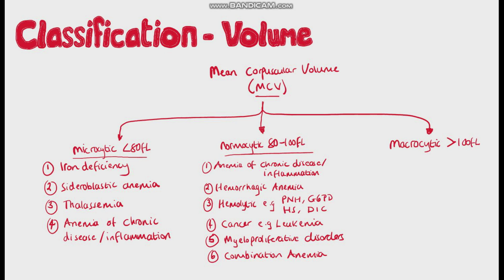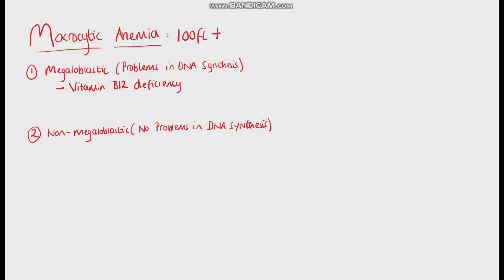Finally, we have macrocytic anemias, where the MCV is above 100 femtoliters. These could be further divided into megaloblastic and non-megaloblastic. Megaloblastic meaning we have a problem in DNA synthesis and repair, whereas non-megaloblastic do not have DNA replication problems. Under megaloblastic, we have the ones that are more typical, like vitamin B12 deficiency and folate deficiency.